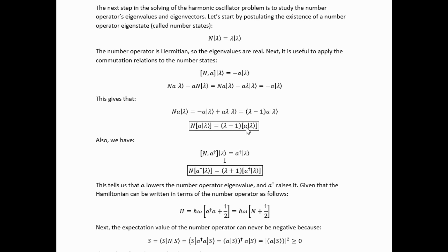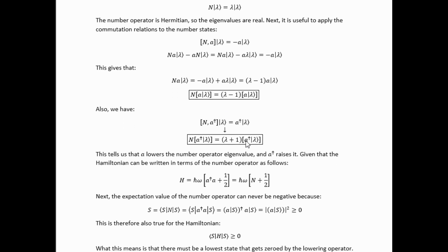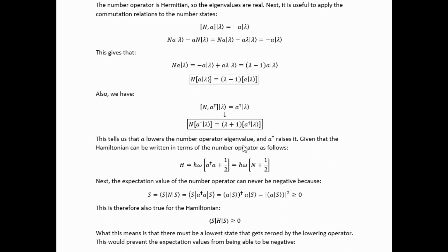So we see that the effect of this A operator is to lower the number operator eigenvalue by one and the Hermitian conjugate has the opposite effect. It raises it by one.